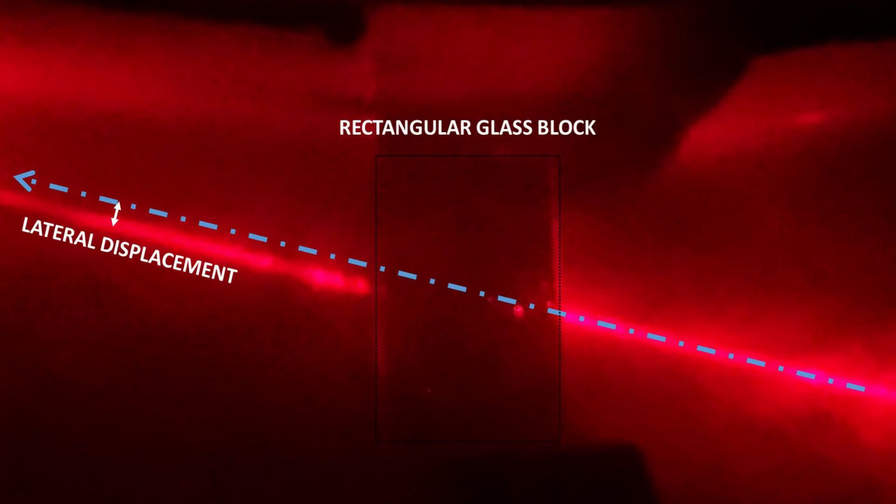You can also see rectilinear propagation of light — a straight monochromatic ray striking a rectangular glass slab. You can see the incident ray, the refracted ray inside the slab, and then the emergent ray coming out. The incident ray and emergent ray are parallel to each other, but there is lateral displacement.